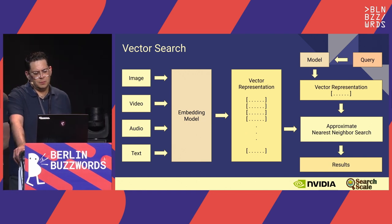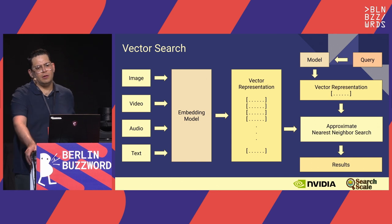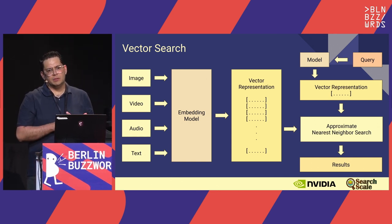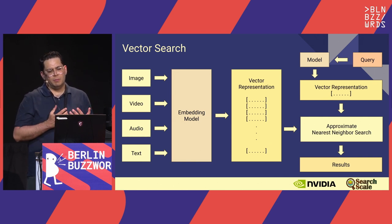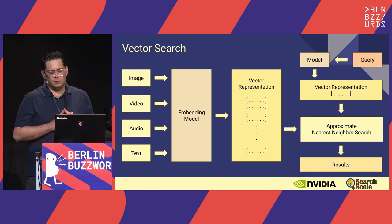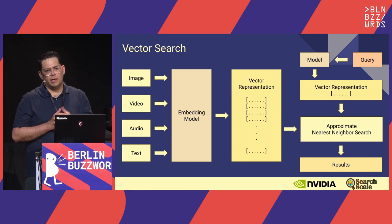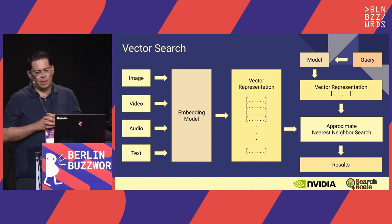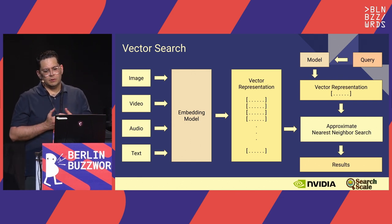In vector search, data of different types can be represented into a sequence of numbers called vector embeddings. Vector search is a data retrieval approach where similar vectors are returned using approximate nearest neighbor search algorithms. On this slide, we show this visually: we have a set of different types of data, and using an embedding model, we have the vector representations for those, which are then queried to return similar, relevant results.